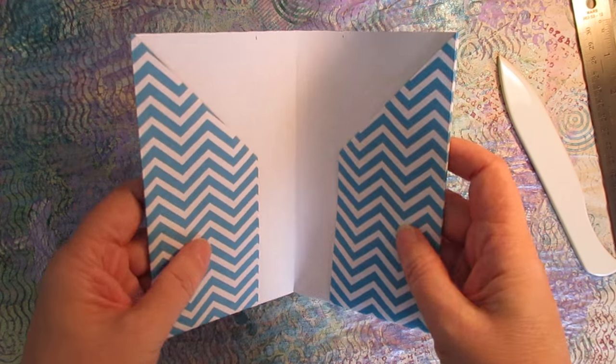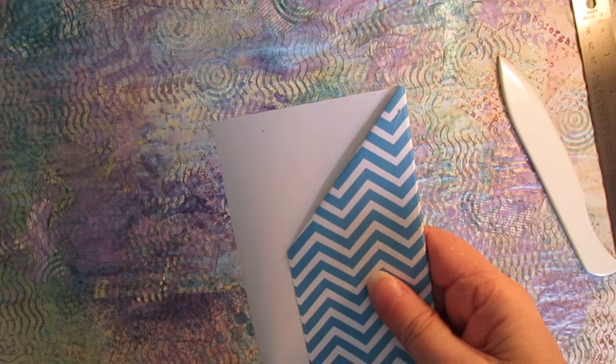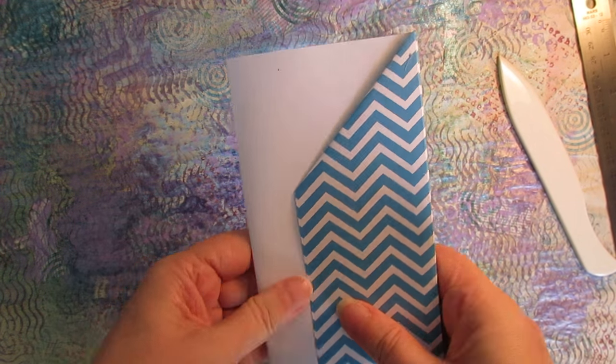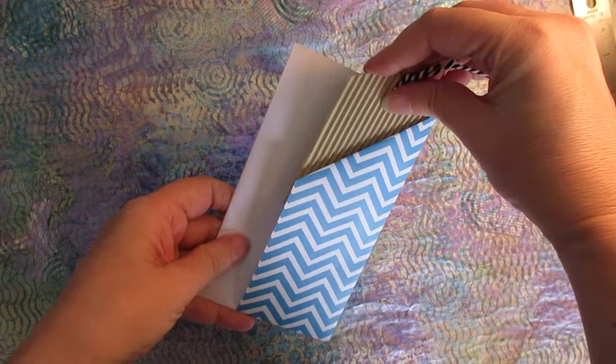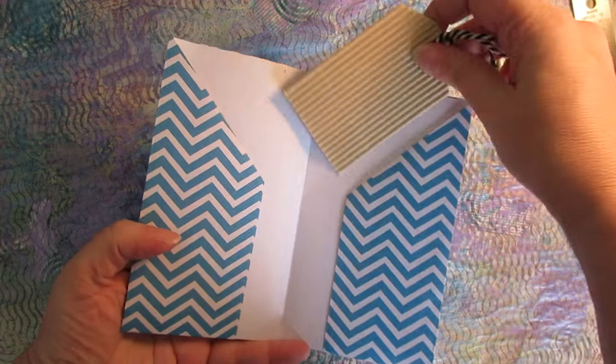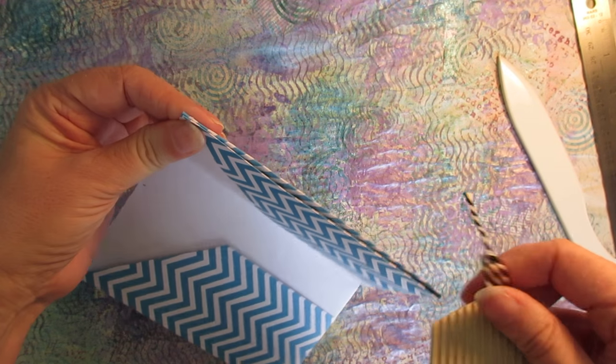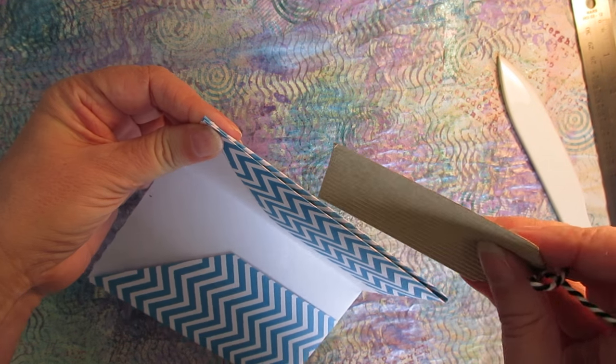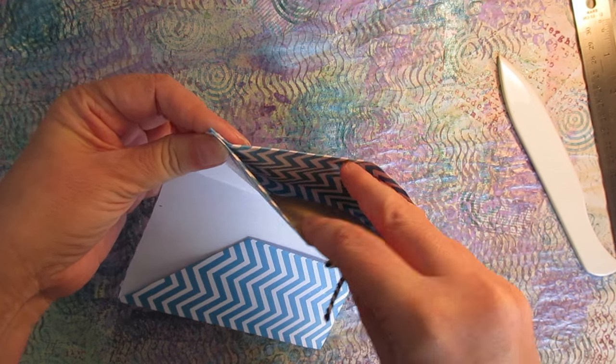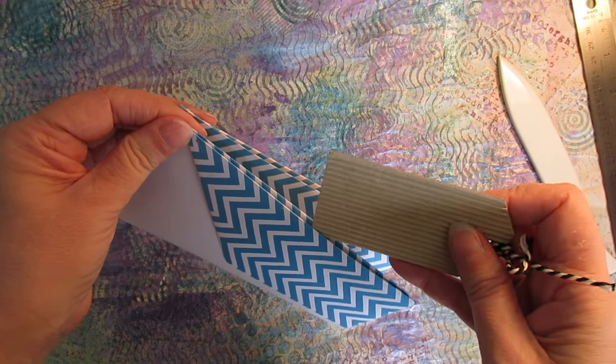And then you've got your page after you fold it together. You've got a pocket here, two pockets in the center, a pocket in the back, and also after the glue dries, you have pockets right in the center here. So lots of pockets to do something with.